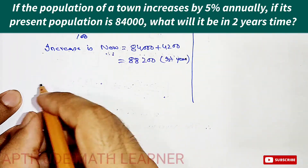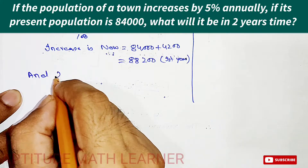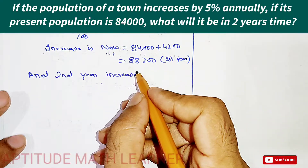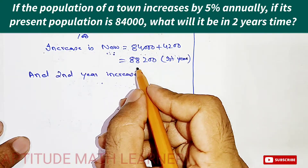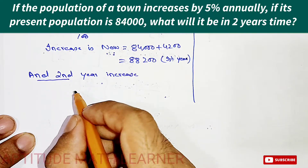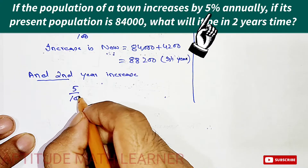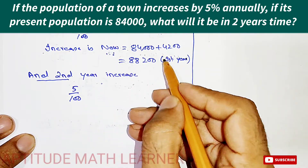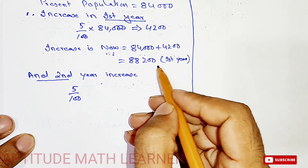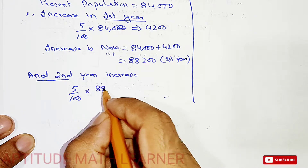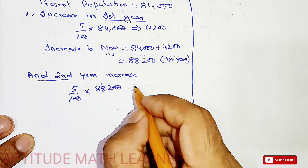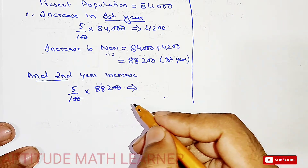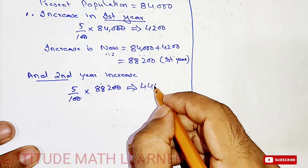Now for the second year: the population has increased to 88,200, and it further increases by five percent. Five percent of 88,200 — cancelling zeros, five multiplied by 8,820 divided by 10 — gives us four thousand four hundred and ten.